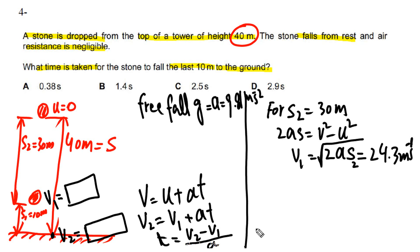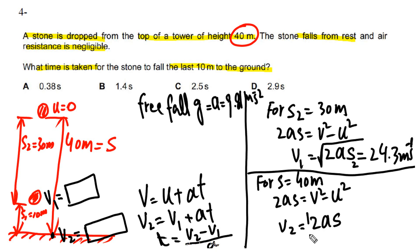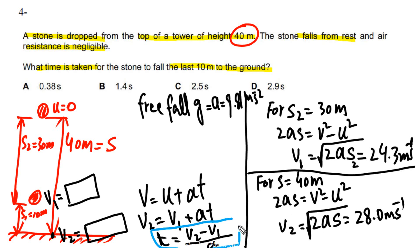To find v2, we repeat the same step using s = 40 m. Using v² = u² + 2as with u = 0, we get v2 = √(2 × 9.81 × 40), which gives v2 = 28.0 m/s. Now we have both v1 and v2, so we can find the time.